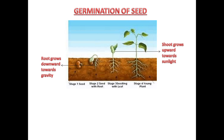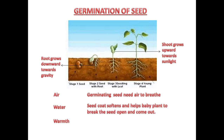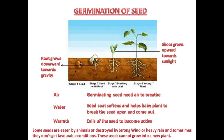Germination of a seed cannot happen without air, water, and warmth of sunlight. The germinating seed needs air to breathe; the seed coat softens with the help of water, helping the baby plant to break open and come out; and the cells of the seed need warmth to become active. Please note that not all seeds grow into new plants — some are eaten by animals or destroyed by strong winds or heavy rain.